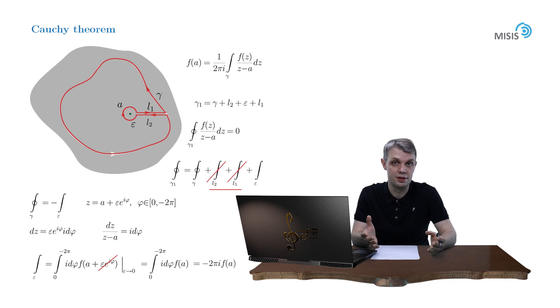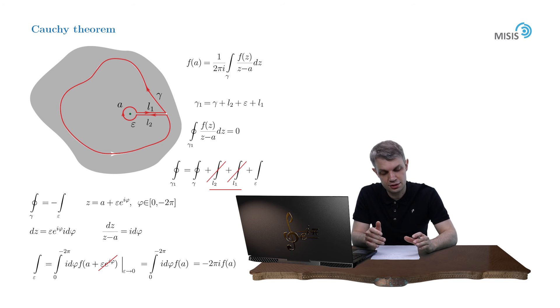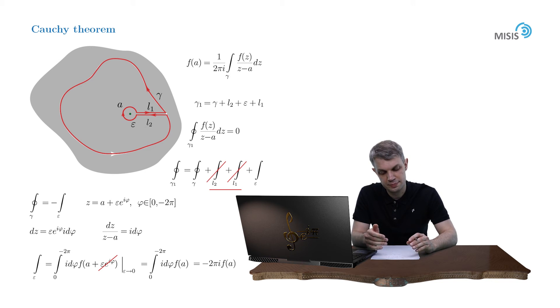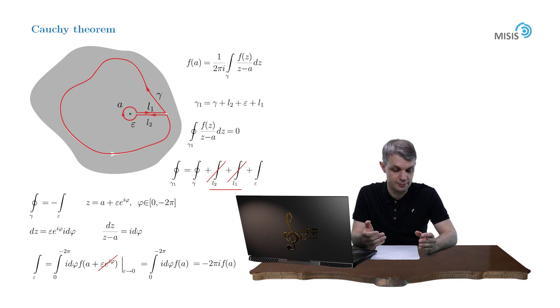This concludes the proof of the theorem. Now I'd like to discuss one more generalization of this result, because up to now we dealt with simply connected regions. But what if the region is more complicated — for example, doubly connected?